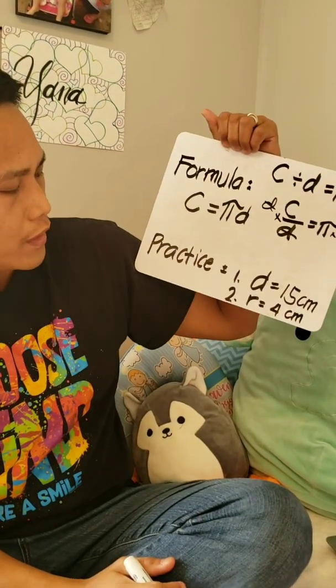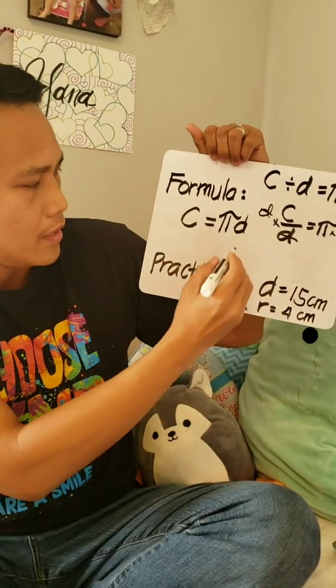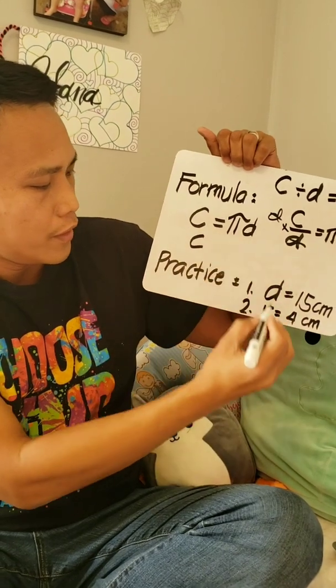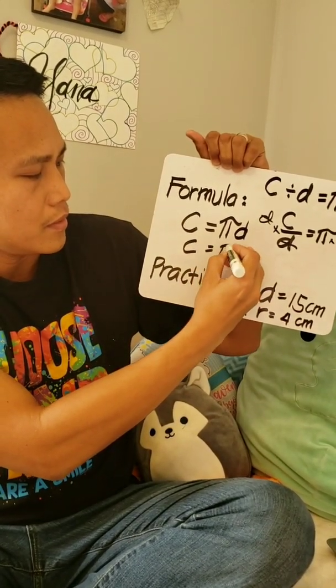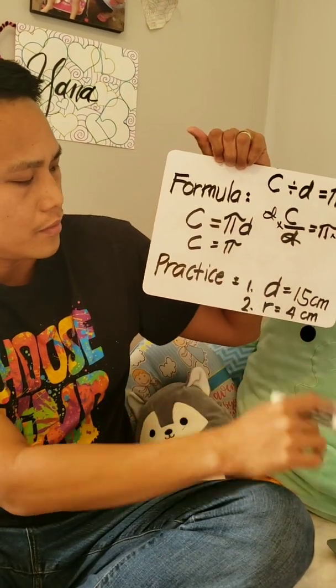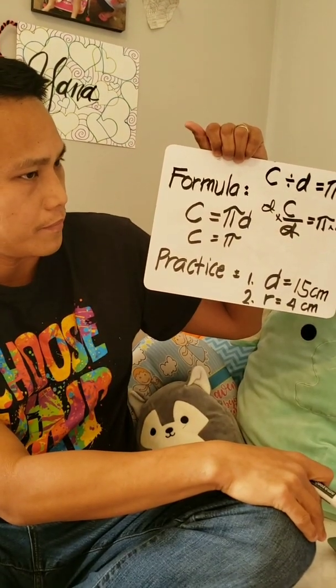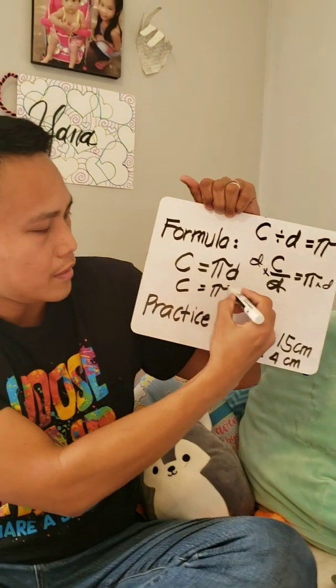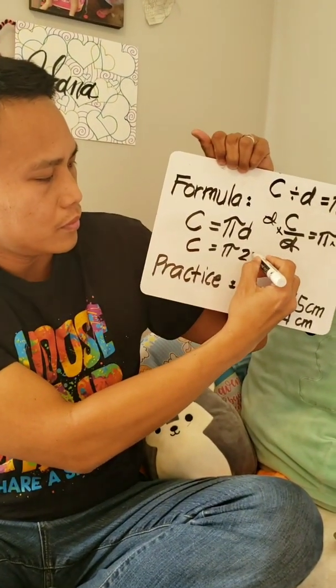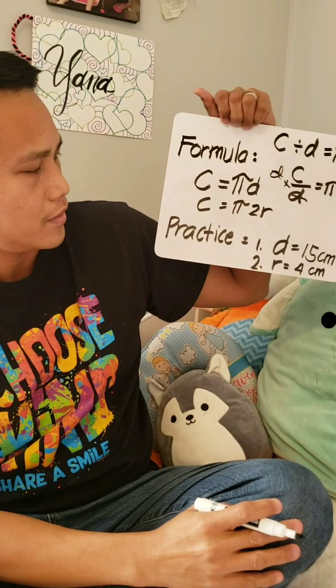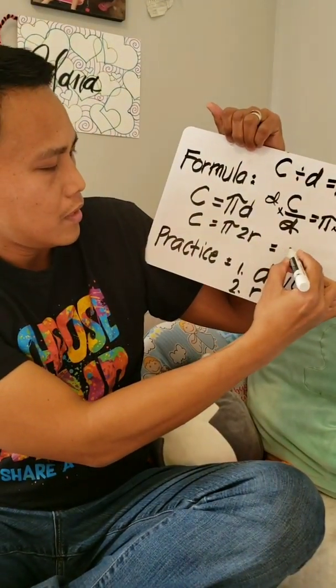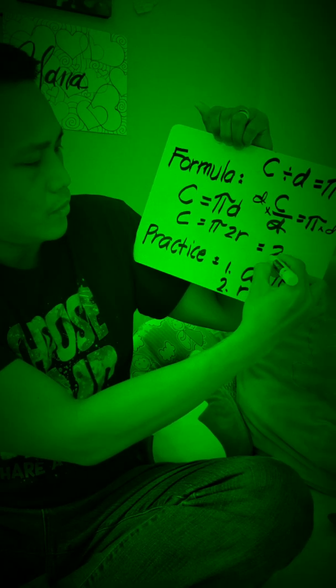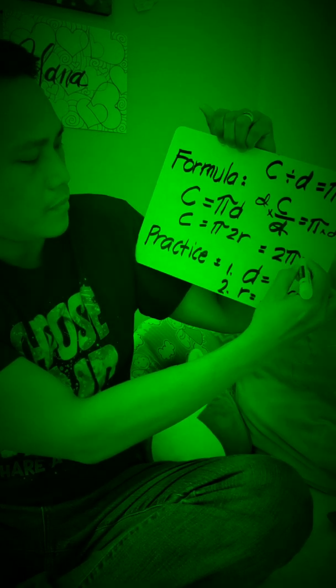Now what if the given is a radius? If we're going to use a radius, it's easy to say pi times, how is diameter related to the radius? It's twice, right? So you can say pi times 2 times the radius. Or let's just say circumference is 2 times pi times r.